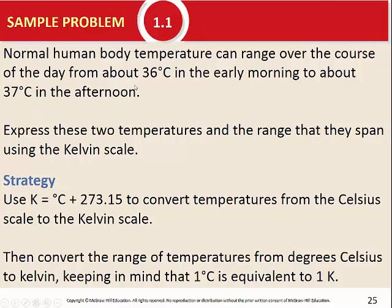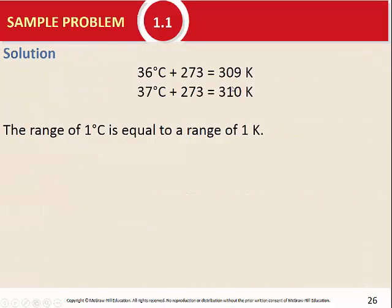Moving on: we need to convert 36 and 37 degrees Celsius to Kelvin, and also find the range — how much they differ. We add 273.15 to each, and rounding using significant figures, we get 309 Kelvin for the first temperature and 310 Kelvin for the second. These two differ by one Kelvin, and our original Celsius values also differed by one degree Celsius, so the range is the same for both scales.